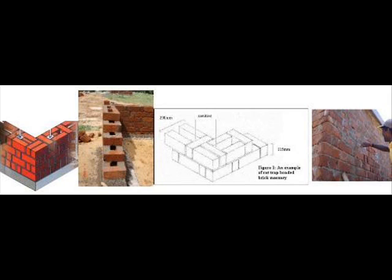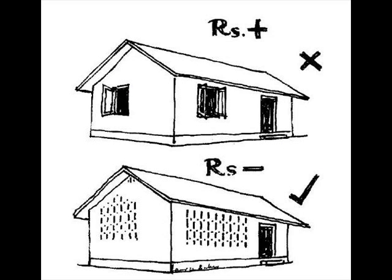Hence, the overall savings on the cost of materials used for construction compared to the traditional 10 inch wall is about 26%.